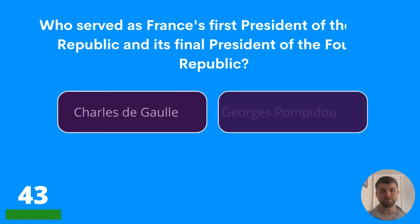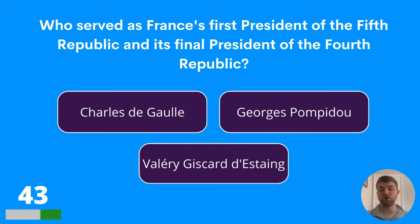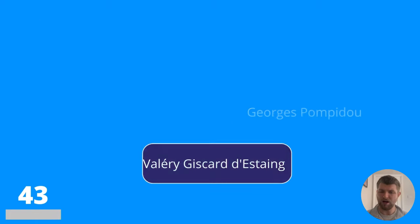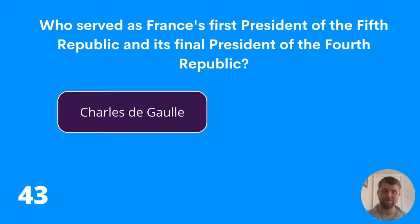Question forty-three: who served as France's first president of the Fifth Republic and its final president of the Fourth Republic? Charles de Gaulle, Georges Pompidou, or Valéry Giscard d'Estaing? The answer is Charles de Gaulle.